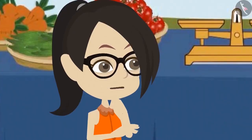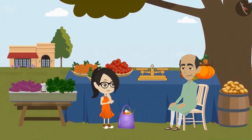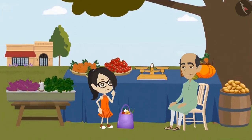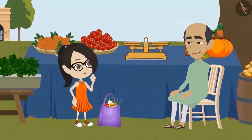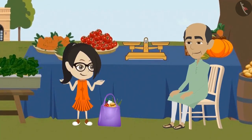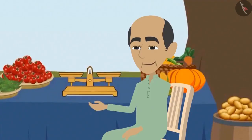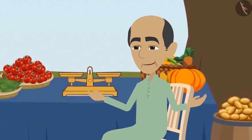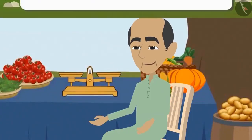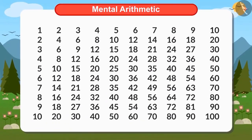Vandana is surprised to see the vegetable seller calculating so quickly. She asked him how he calculated so quickly without any paper and pen. The vegetable uncle told Vandana that if she learns the tables well,